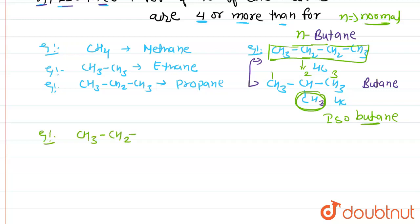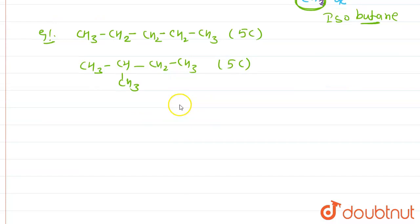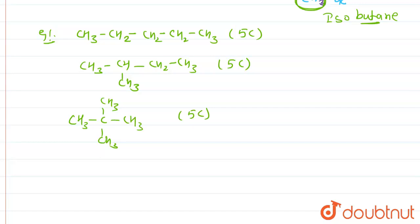CH3-CH2-CH2-CH2-CH3 has five carbons. Another compound, CH3-CH(CH3)-CH2-CH3, also has five carbons. And CH3-C(CH3)2-CH3 also has five carbons. For five carbons, we use the word root 'pent,' and since all single bonds are present, all three are pentane.